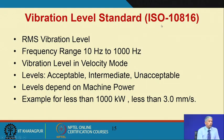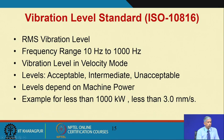ISO 10816 states that vibration level in RMS (root mean square) must be measured, in the frequency range 10 Hz to 1000 Hz, in velocity mode. The standard defines three levels — acceptable, intermediate, and unacceptable — depending on machine power. For example, a machine less than 1000 kW should have a maximum RMS velocity level of less than 3 mm/s. The standard has different parts depending on the type of machine.